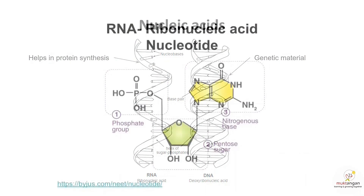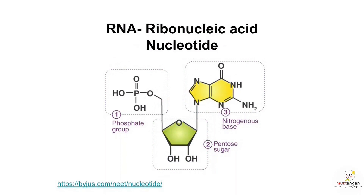The full form of RNA is ribonucleic acid. RIBO stands for ribosugar. Similar to DNA, RNA is also a polymer of nucleotides. It consists of ribosugar, phosphate group, and a nitrogenous base. However, there are some differences which we will look into.